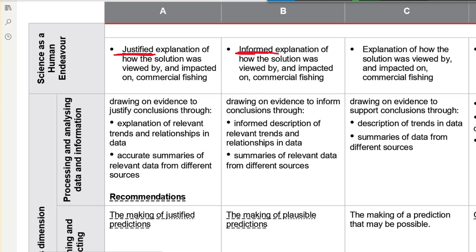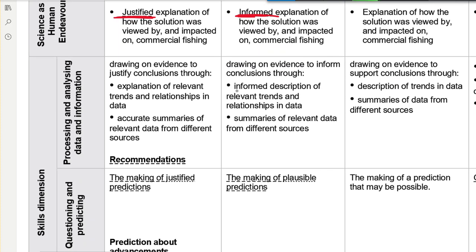Let's look at the second part of it. What's different? This one's informed again, this one is an explanation. So are you just making a statement or are you actually going in depth and explaining this thing? Is it an accurate summary or just summaries?